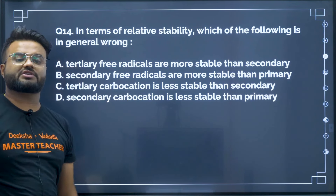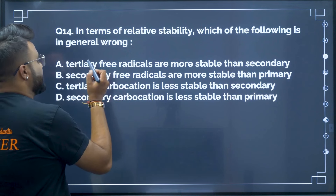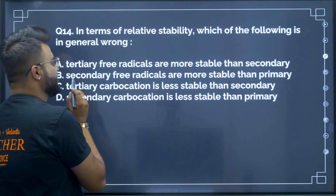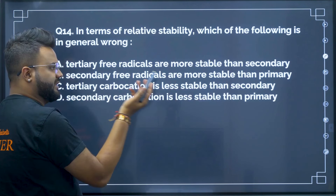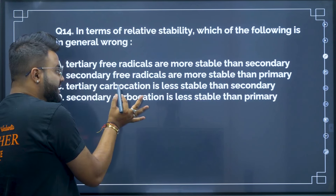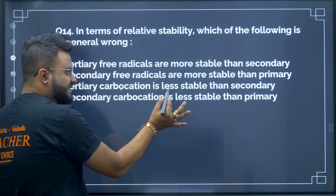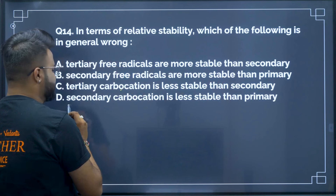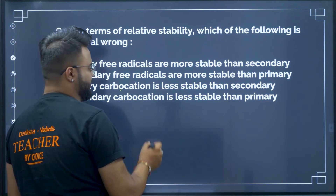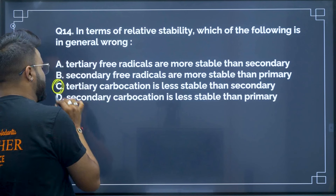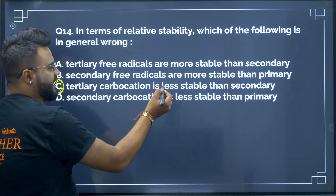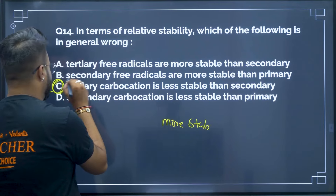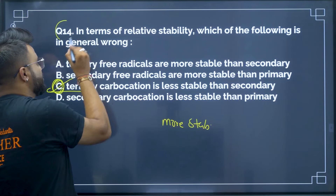Question 14: In terms of relative stability, which statement is wrong? Tertiary free radicals are more stable than secondary — true. Secondary free radicals are more stable than primary — true. Tertiary carbocation is less stable than secondary — this is wrong, because tertiary carbocation is MORE stable than secondary. Secondary carbocation is less stable than primary is also wrong. Therefore option C is the wrong statement and is your correct answer.